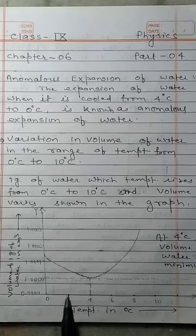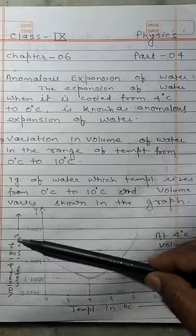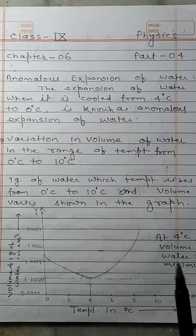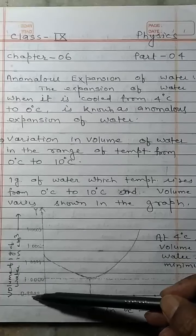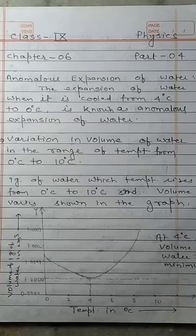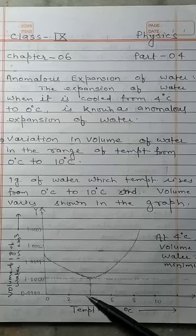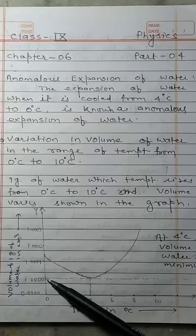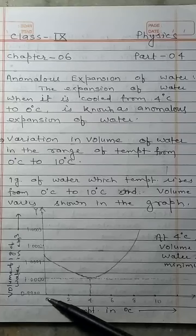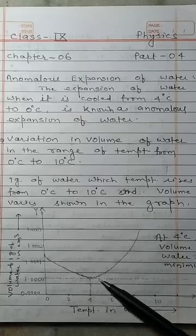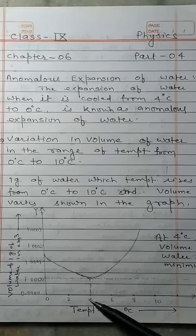Temperatures are taken on the x-axis and volumes are taken on the y-axis. The temperatures 0, 2, 4, 6, 8, and 10 are marked on the x-axis, and volumes 0.999, 1.000, and 1.001 cubic centimeters are on the y-axis. From this graph, it is clear that as temperature increases from 0°C to 4°C, the volume of water decreases.